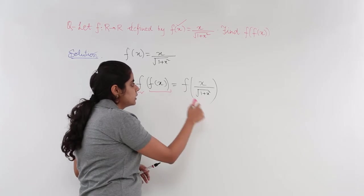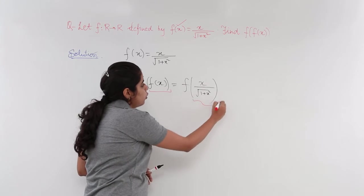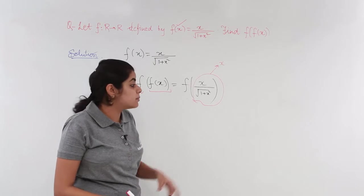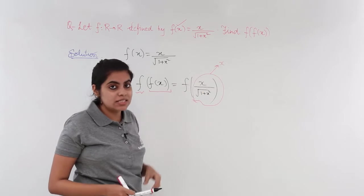Now, f of x means function and in it we have a variable. f of this bracket means the whole bracket will now serve as my x. So, it becomes f of x.